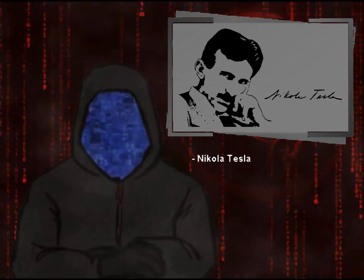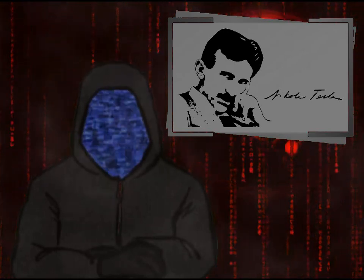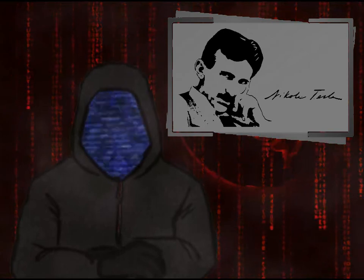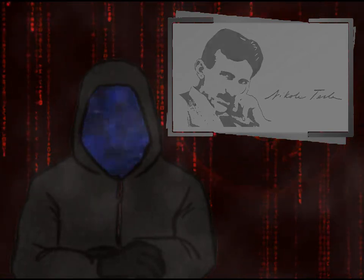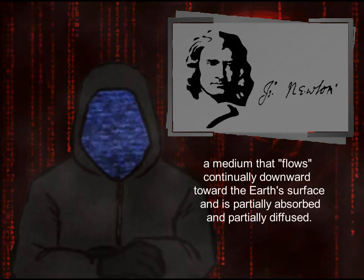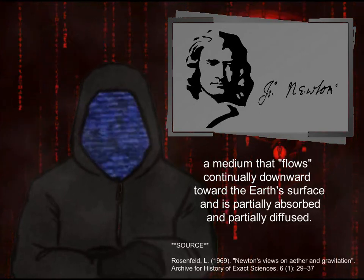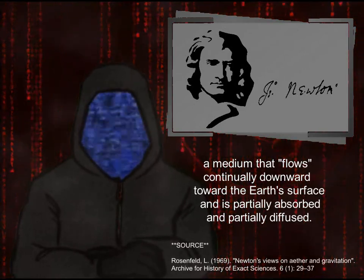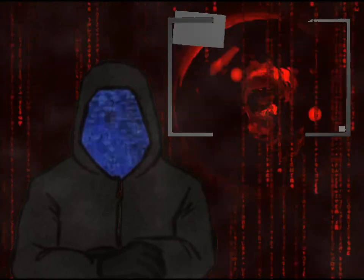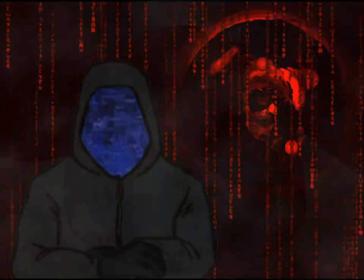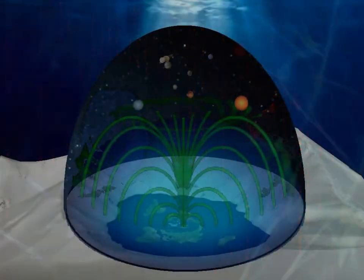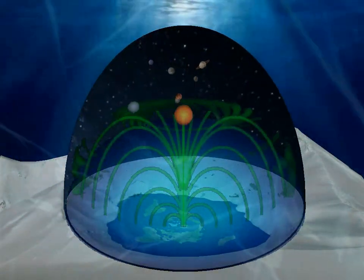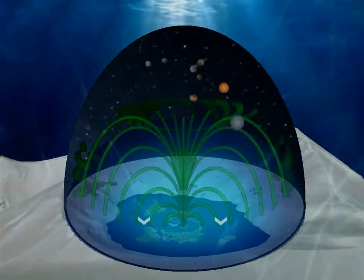But Tesla mentions the ether — hasn't that been debunked? Well, if I'm right, the ether is actually Earth's magnetic field. Isaac Newton described the ether as a medium that flows continually downward towards the Earth's surface and is partially absorbed and partially diffused. On the flat Earth model, the magnetic field rotates, oscillates, and flows continually downward towards the Earth's surface.